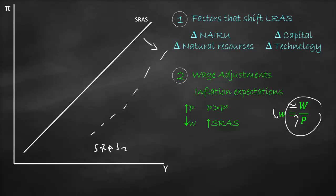A third factor that shifts the short-run aggregate supply curve is the cost of production. For example, if we have lower energy costs, the cost of production will be lower, and therefore the short-run aggregate supply curve will shift to the right.